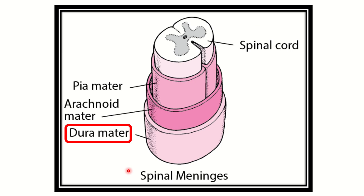Let's look at this picture of the spinal cord. Here we can see the main spinal cord, and just outside the spinal cord is the pia mater. Outside the pia mater is the arachnoid mater, and outside the arachnoid mater is the dura mater. So the spinal cord is covered by three layers.